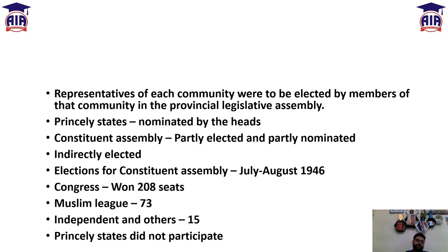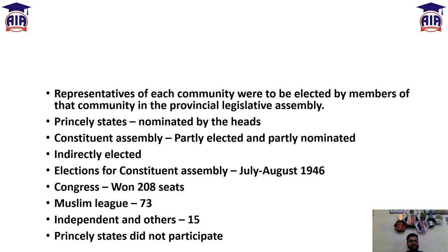The Constituent Assembly election was conducted in July-August 1946. The results made it clear that Congress won 208 seats, the Muslim League won 73 seats, and there were around 15 seats won by independents and other small parties. The Princely States did not participate in this election.